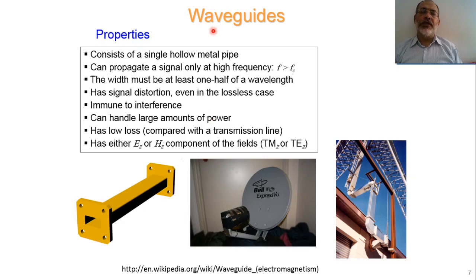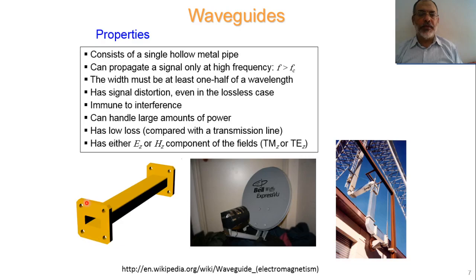The other type of waveguiding structure is waveguides. Unlike transmission lines, which have two conductors, waveguides are principally a hollow pipe of conducting material — like a coaxial transmission line without an inner conductor. We are going to study waveguides in the following chapter, Chapter 3. In Chapter 2, we are going to study only transmission lines.